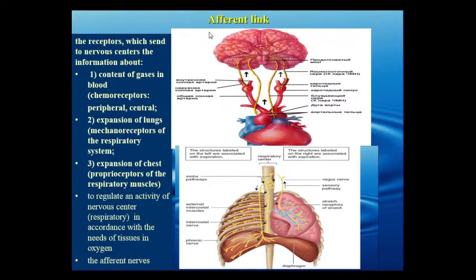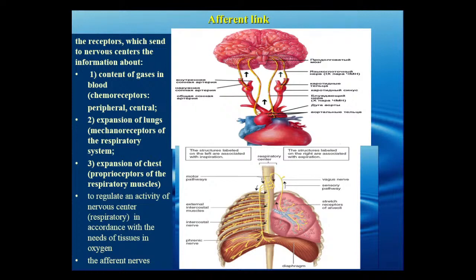The afferent link consists of receptors that send sensory information to the nervous center. This information is about the content of gases in blood — specifically the partial pressure of oxygen and carbon dioxide. Changes in partial tension of these gases are detected by chemoreceptors. There are two groups: peripheral chemoreceptors located in vessels and central chemoreceptors located directly in the medulla oblongata.